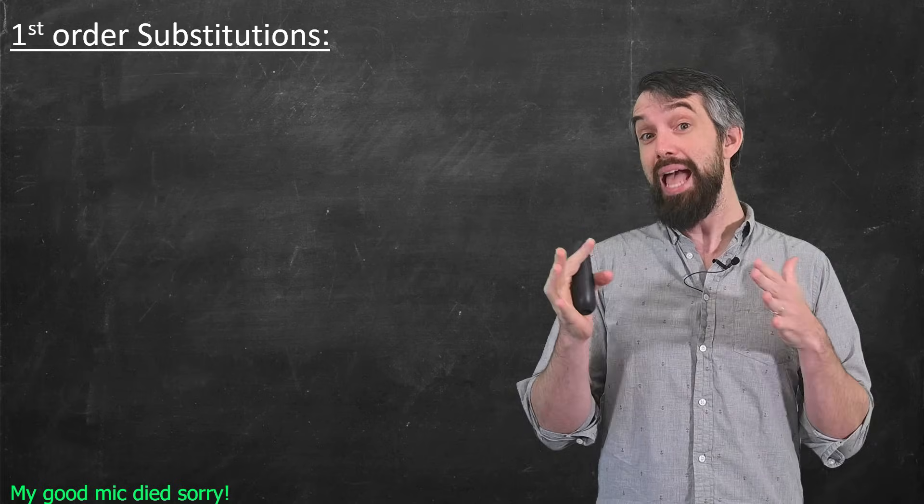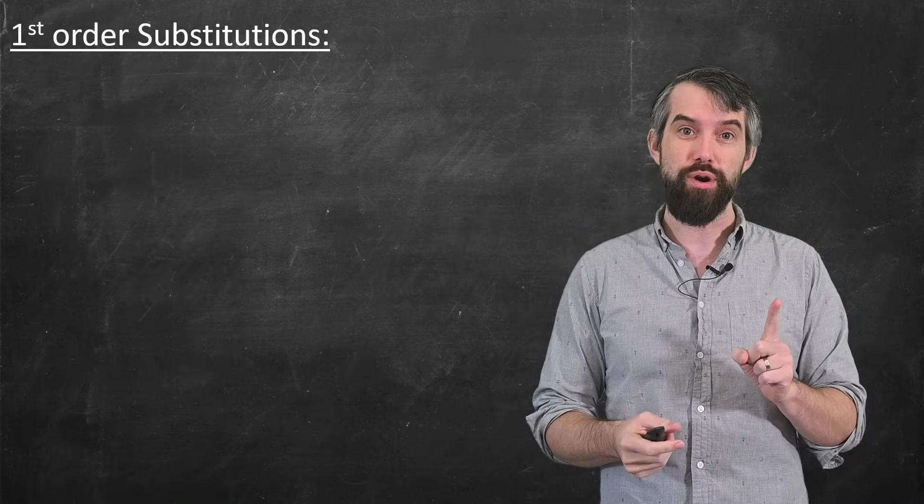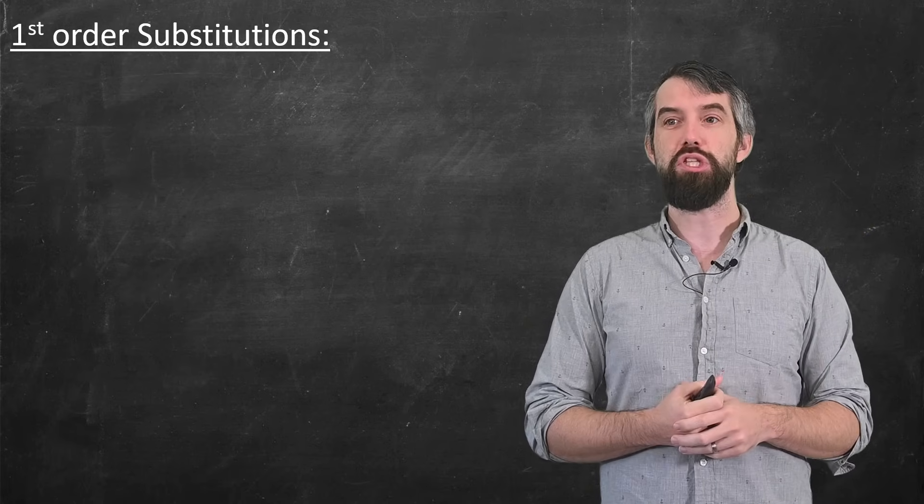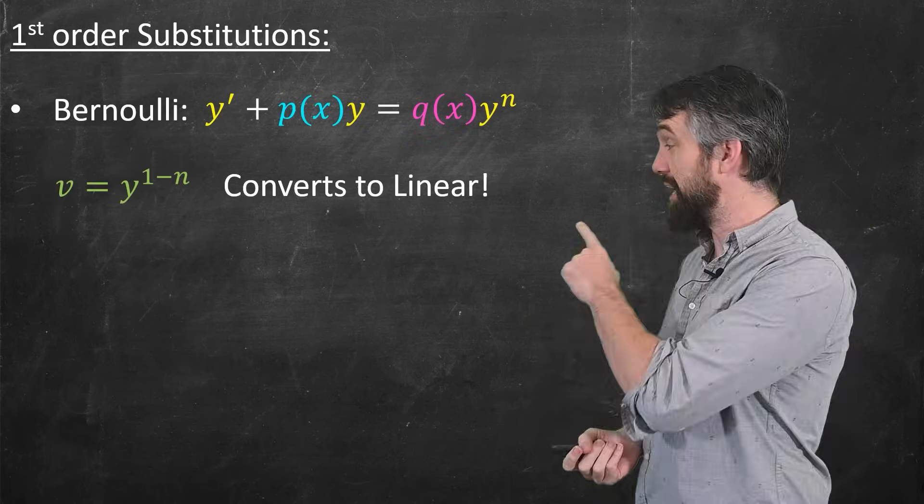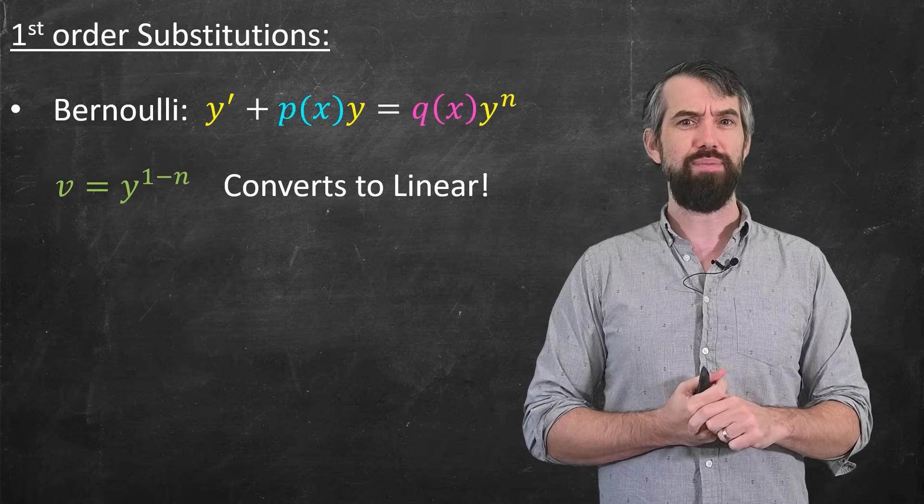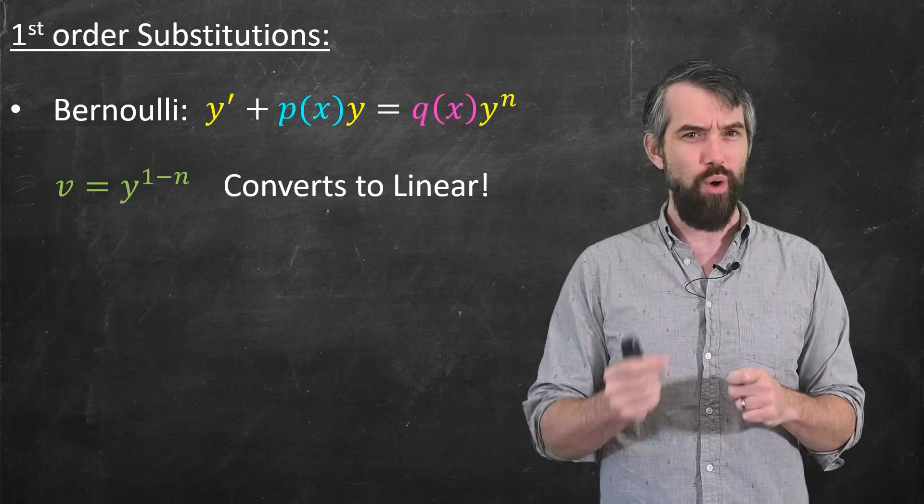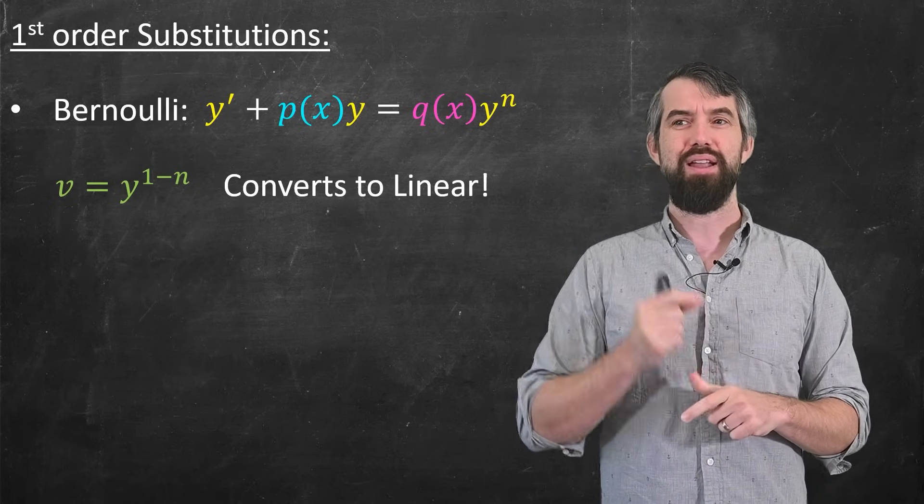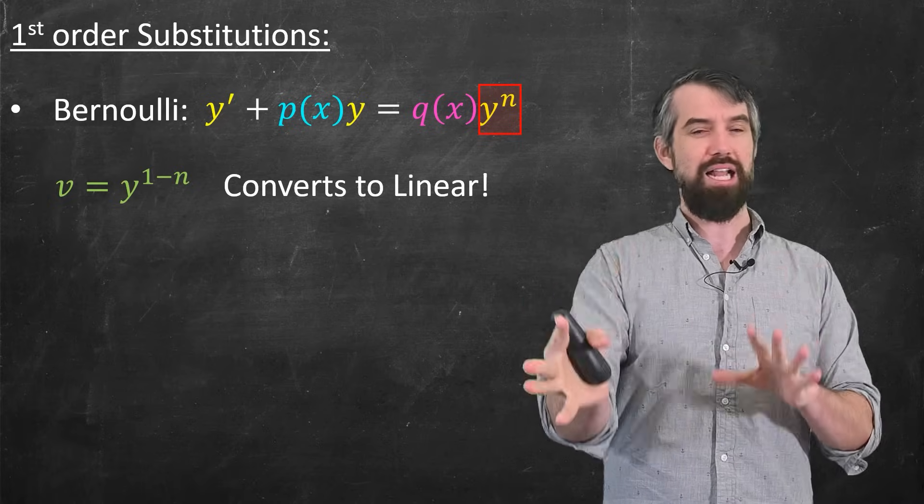Those are the two biggest analytical methods that apply for first order, but sometimes you're given equations that don't look like that at all. For example, Bernoulli equations. This is something with y prime plus p of xy, it's kind of looking linear, but then you get q of xy to the n, that's non-linear.